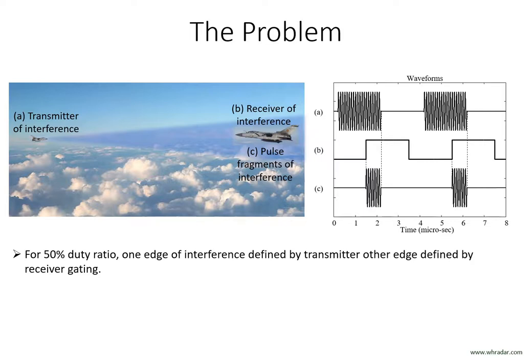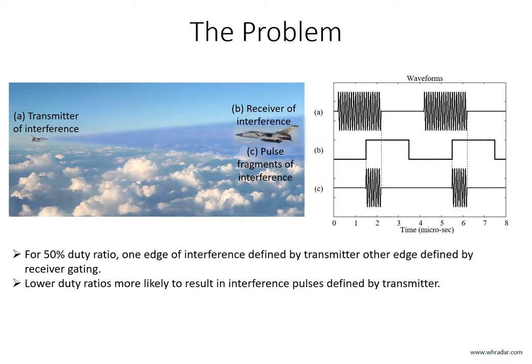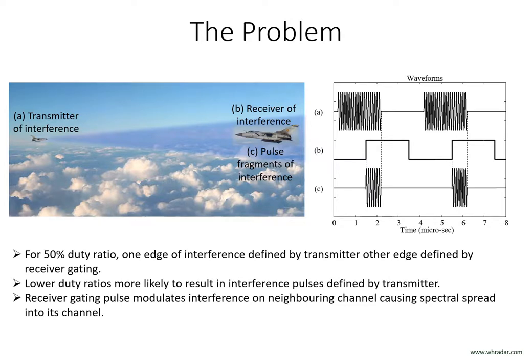If both radars operate on a 50% duty ratio, then one edge of the interference fragment will be defined by the transmitter of the interference pulses and the other edge by the receiver gating of the victim. For lower duty ratios it becomes more likely that both edges will be defined by the transmitter of the interference pulses, although the receiver gating can never be discounted. This interference may well be on a different channel frequency to that of the receiver, but its pulse modulation may cause its spectrum to encroach into the receiver's channel and give rise to problems.